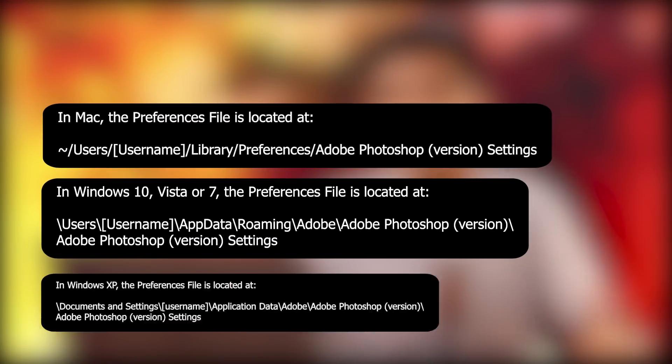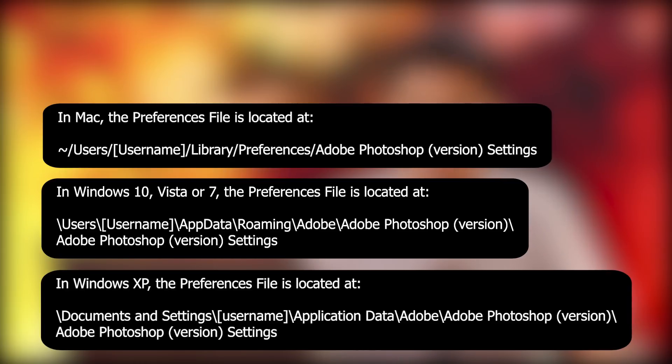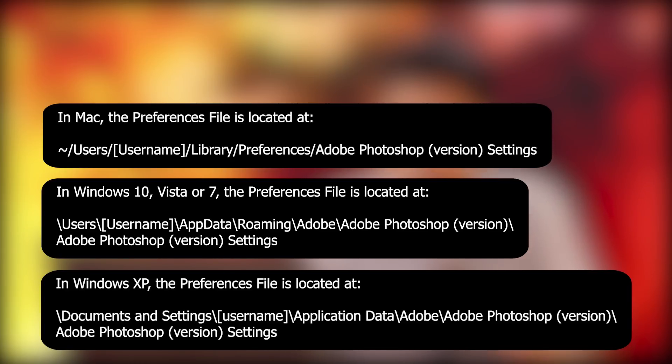For Mac, the location is shown on screen. For Windows 7 and XP, the locations are also given on screen. Inside those locations you'll find the Preferences file, and you have to move that file. For Windows 10, I'm going to show you how. If you're on a Mac, the library folder might be hidden, so you may have to unhide it first.